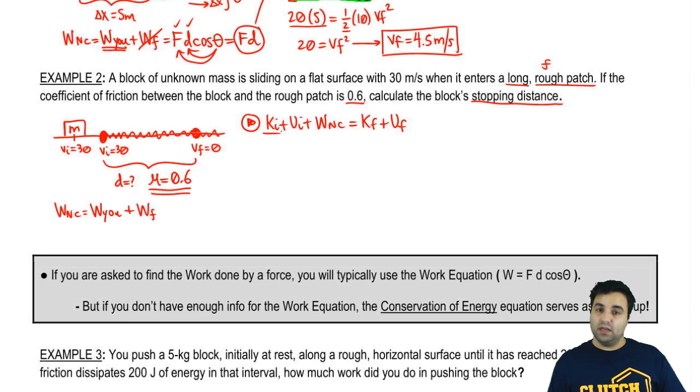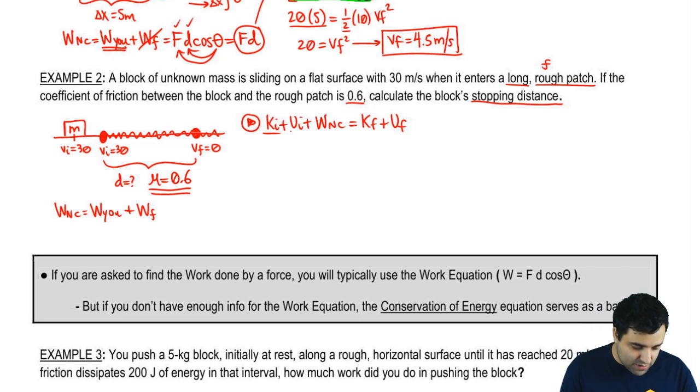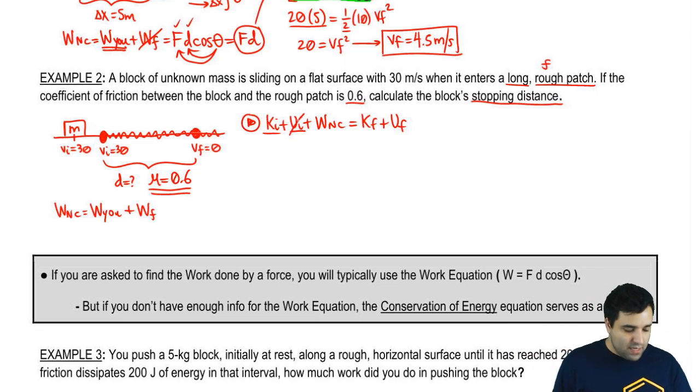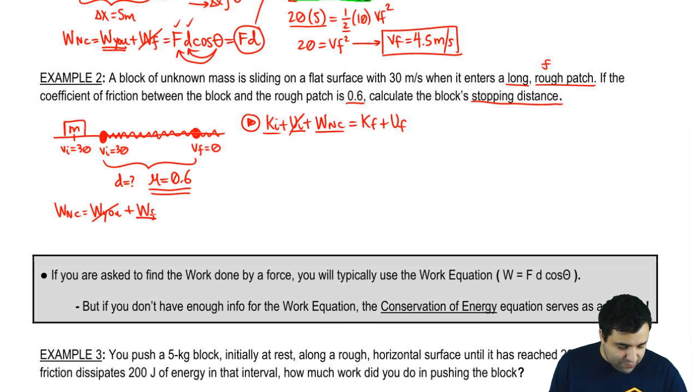Is there kinetic energy at the beginning? There is, because there's a velocity. Is there a potential energy at the beginning? There is not, because this thing is on the ground level. Is there work done by non-conservative forces? The work done by you is zero because you're not doing anything, you're just watching this thing move. The work done by friction does exist, because as this object's moving to the right, friction is pushing it to the left. Friction is slowing the block down, consuming its energy.